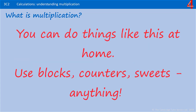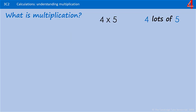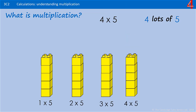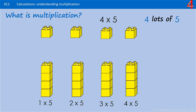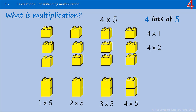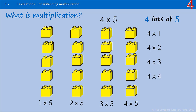You can do these sorts of arrays with your child at home — you can use pretty much anything. For example, 4 lots of 5: there's 1 lot of 5, we add another lot of 5, that's 2 lots of 5, another lot — 3 lots of 5, another lot — that's 4 lots of 5. 4 times 5 is the same as 5 times 4. There's 1 lot of 4, 2 lots of 4, 3 lots of 4, 4 lots of 4, and 5 lots of 4 — which could be 4 times 5 or 5 times 4. This is the array for 4 times 5 or 5 times 4, and we have 20.